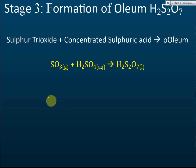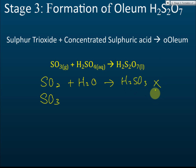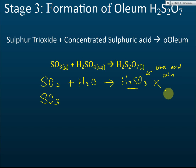In stage two we get sulfur trioxide. In stage one we get sulfur dioxide. If you dissolve sulfur dioxide in water, you will get sulfurous acid. This is not what we want — it's a weak acid and not very useful. However, it can cause acid rain, so you must know this.